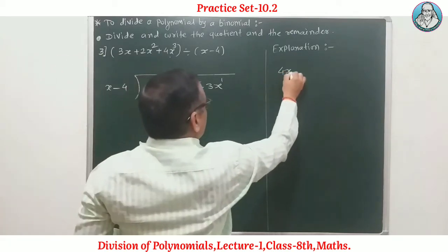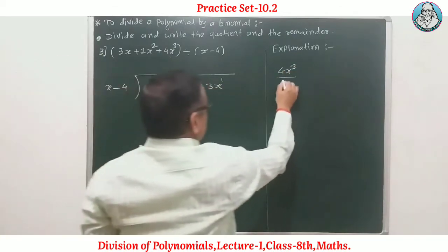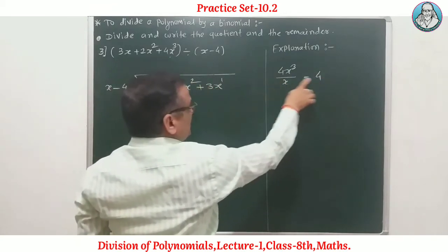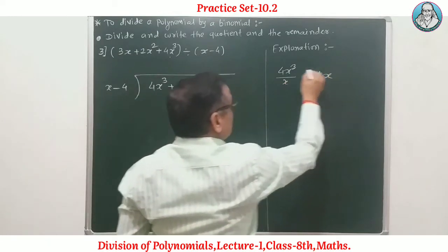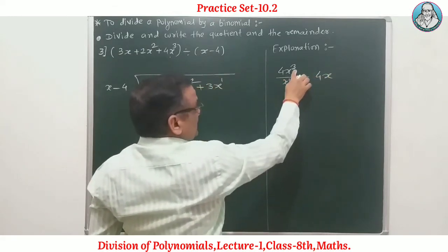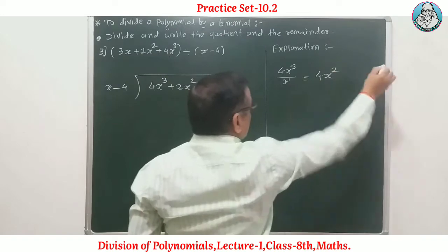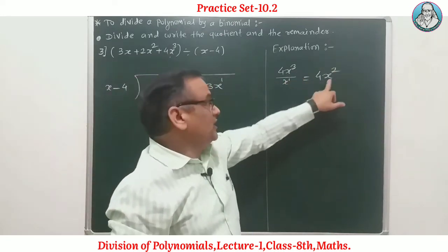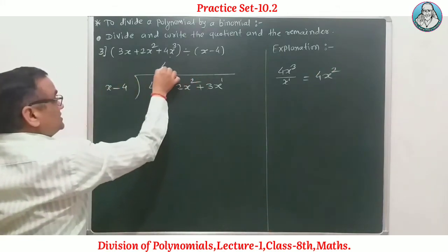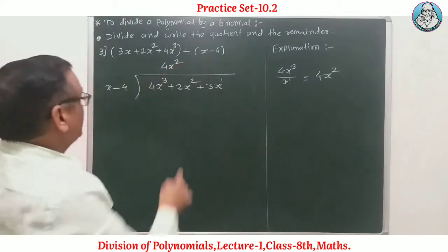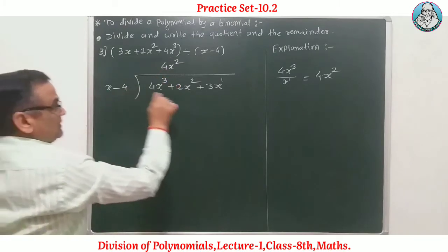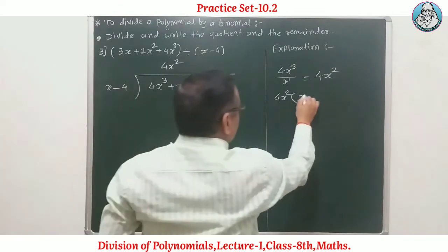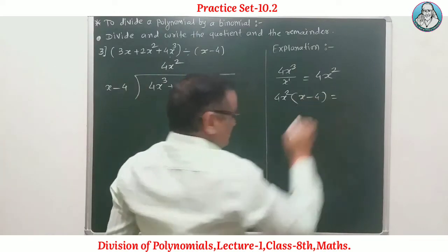First step: divide 4x³ by x. 4 divided by 1 is 4, and x³ divided by x gives x². So the first term of the quotient is 4x². Now multiply 4x² by (x − 4).